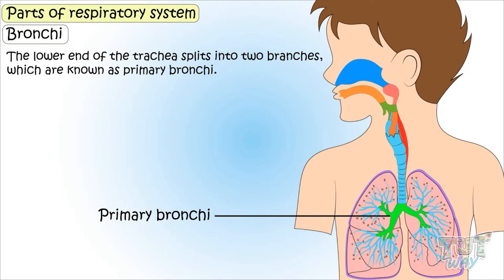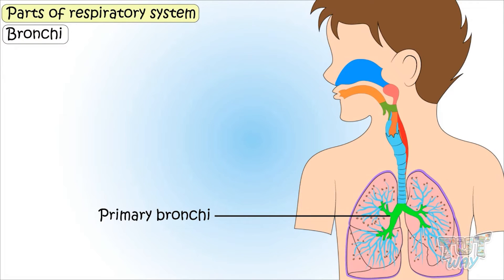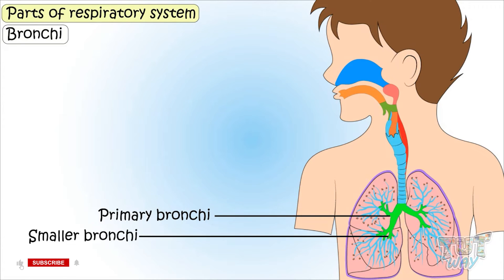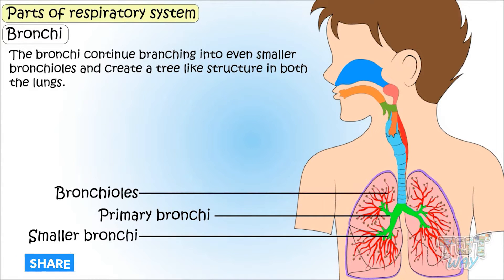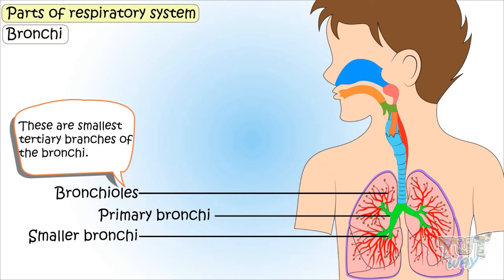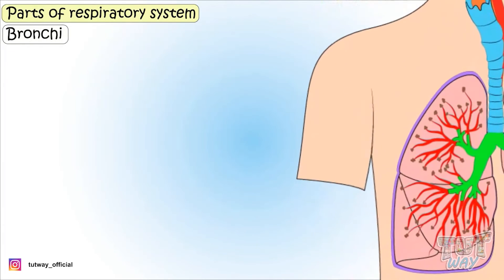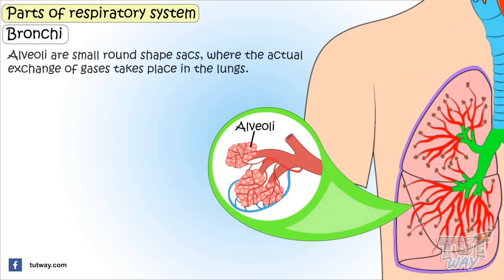These primary bronchi enter the lungs and then branch off into many smaller bronchi. The bronchi continue branching into even smaller bronchi, creating a tree-like structure in both lungs. The smallest tertiary branches of the bronchi are known as bronchioles. They end in very small structures called alveoli — small round-shaped sacs where the actual exchange of gases takes place in the lungs.